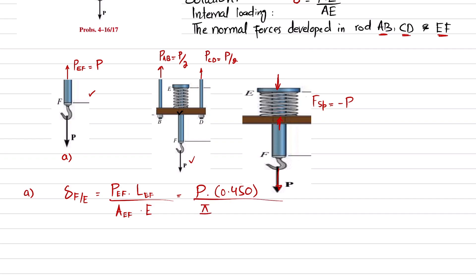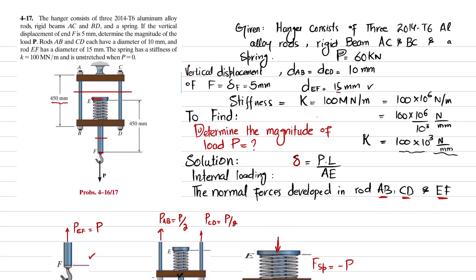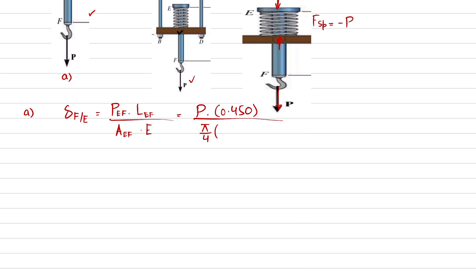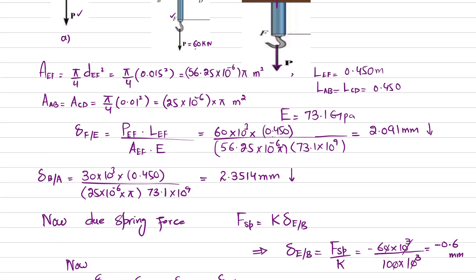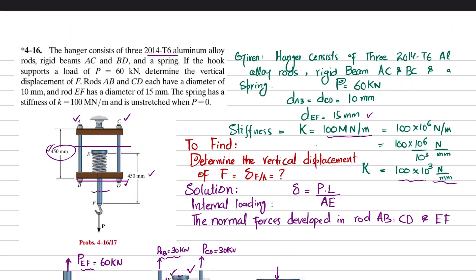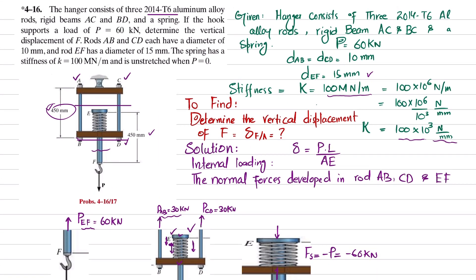Area is π/4 times d², so diameter of EF is 15 millimeters, so in meters it is 0.015, and it will be squared.